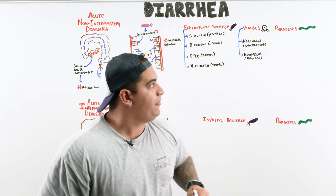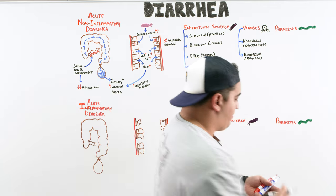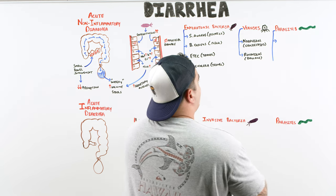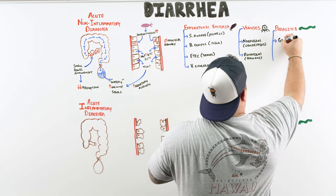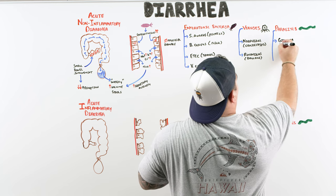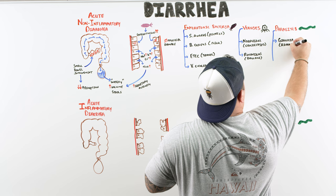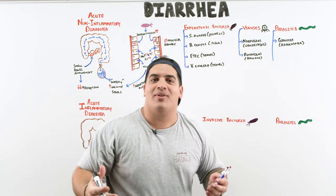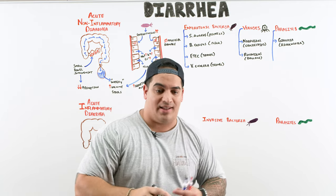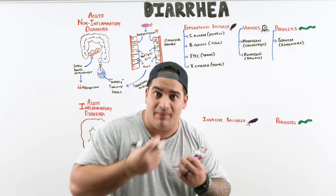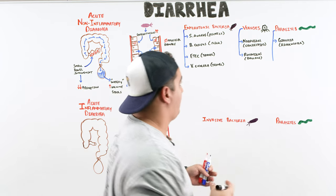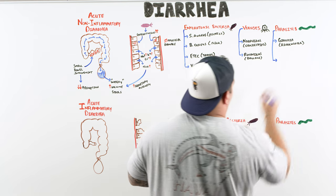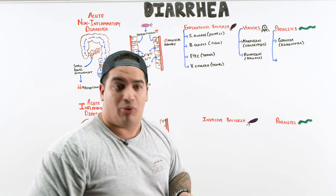For parasites causing acute non-inflammatory diarrhea, there are two important ones. First is Giardia — think river water, also called beaver fever. It's a nasty protozoa that lives in river water, and ingestion leads to some really terrible diarrhea.